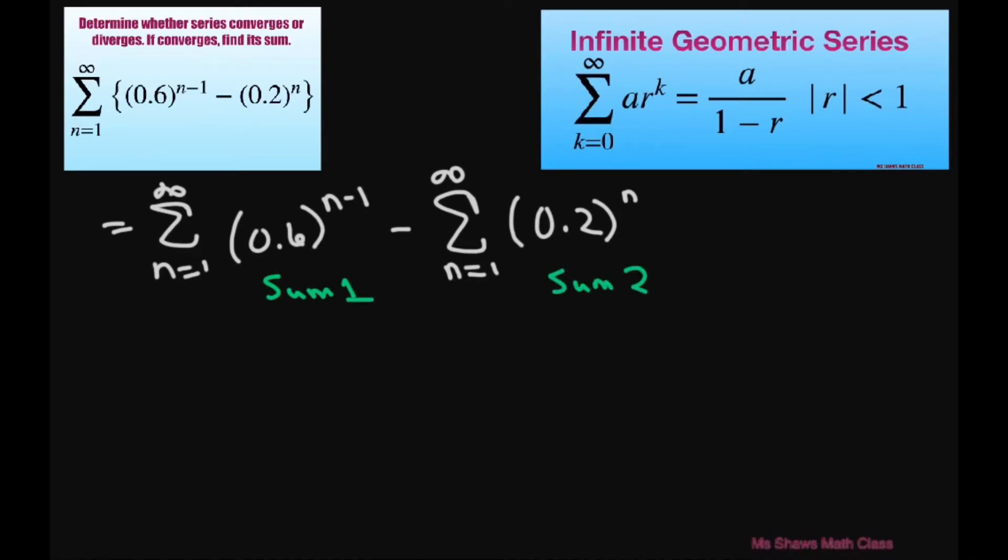So for our first term, if you substitute in 1, you'll get 0.6 to the 0 power. So your first term a is going to be 1. Your common ratio is going to be 0.6 and the absolute value of that is less than 1. So we're just going to find our sum.